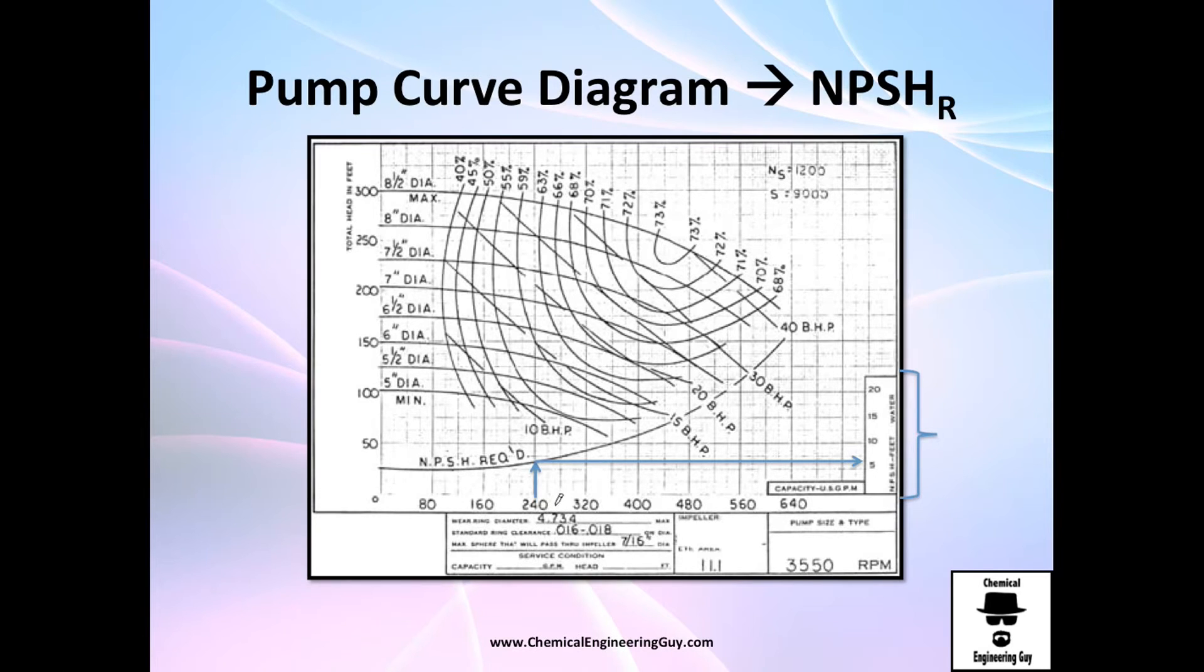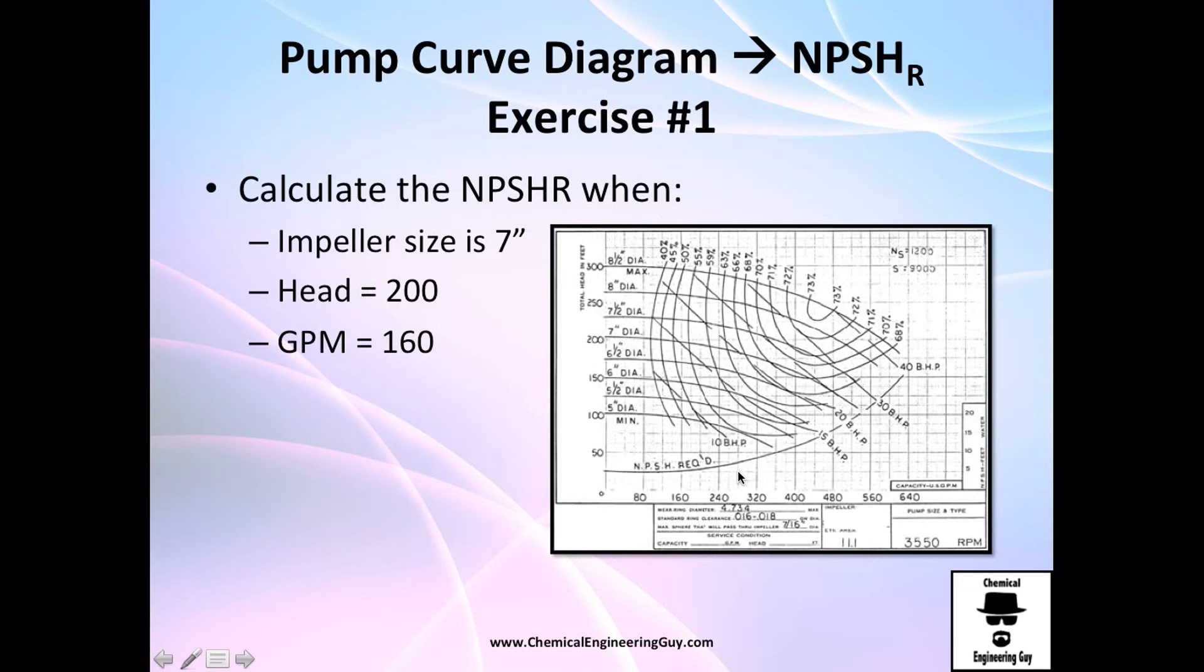Let's see what's the NPSH R. I will operate with 240 gallons per minute. I intersect this and go directly to the right and find it to be 5 or something around 5. For 480, intersect with this line and go to the right, and my NPSH R must be 15. We're going to do a pretty cool exercise in which we go backwards.